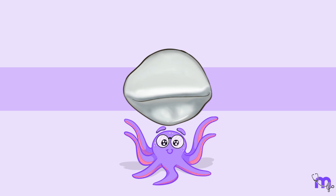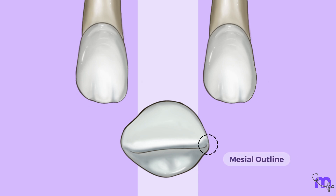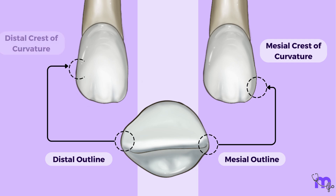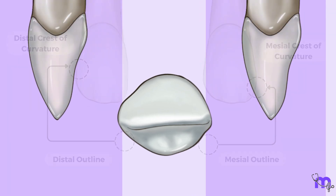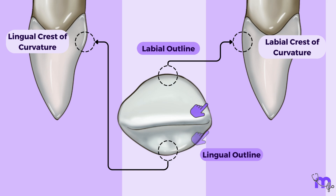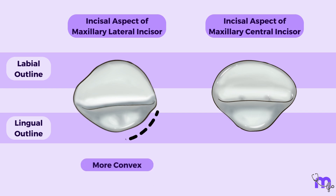Lastly, let us also view the tooth from the incisal aspect. The mesial outline and distal outlines are represented by the mesial crest of curvature located at the junction of the incisal and middle third, and the distal crest of curvature located at the middle of the middle third. The labial and lingual outlines are represented by the crests of curvature present at the cervical third, both labially and lingually. Both the labial and lingual outlines appear more convex than those seen in the central incisor.